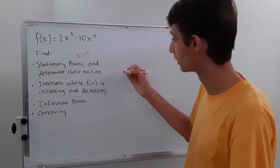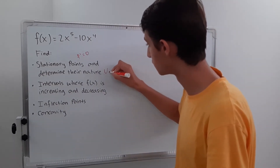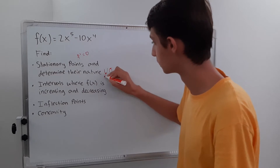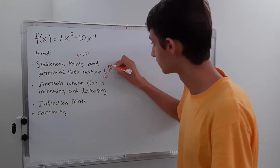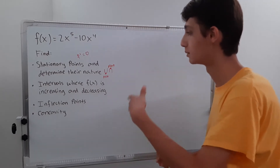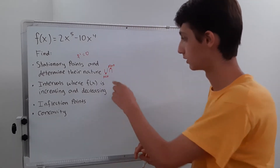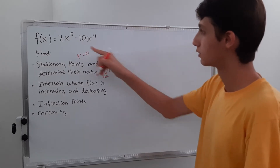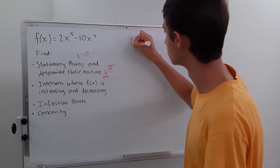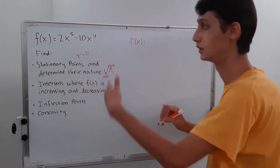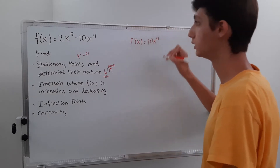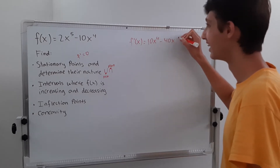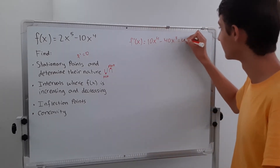To determine the nature of stationary points, you have to figure out whether it's a minimum or a maximum. A minimum occurs when your point is at the bottom, and a maximum when it's at the top — local minimum and local maximum. A local minimum is the lowest point in a certain area. So first, we have to find our derivative, which is f prime of x, and we are going to set that equal to zero.